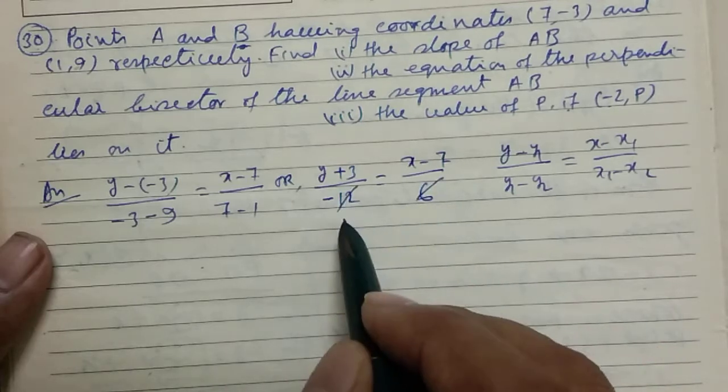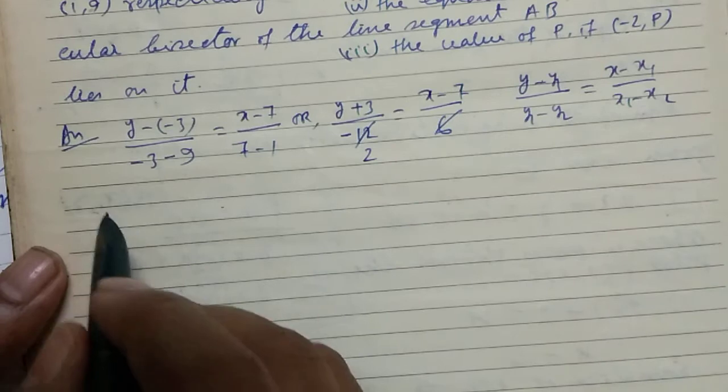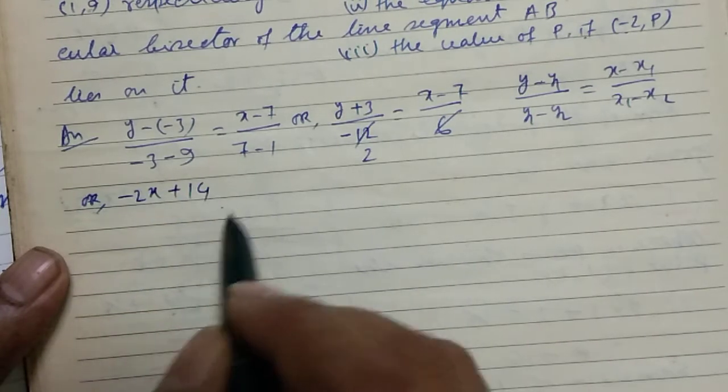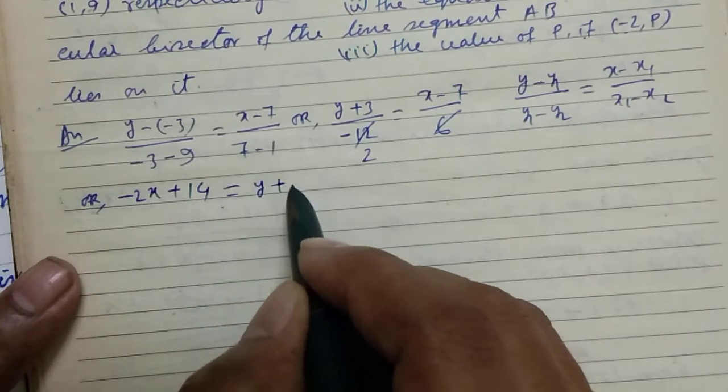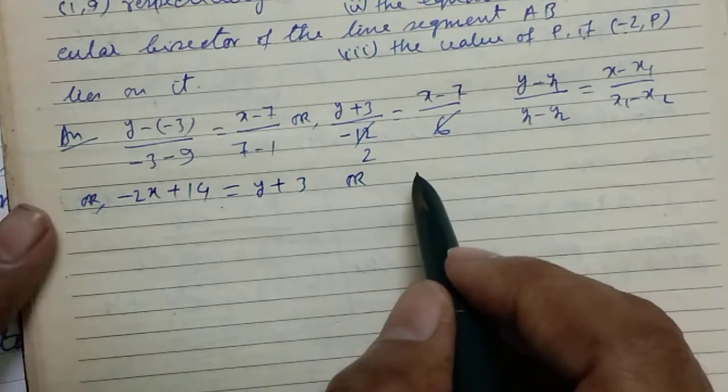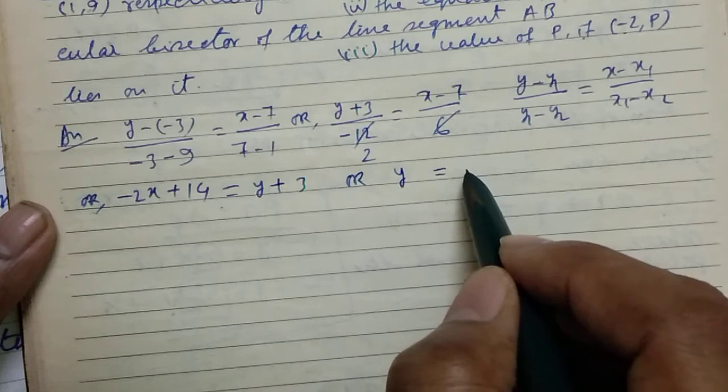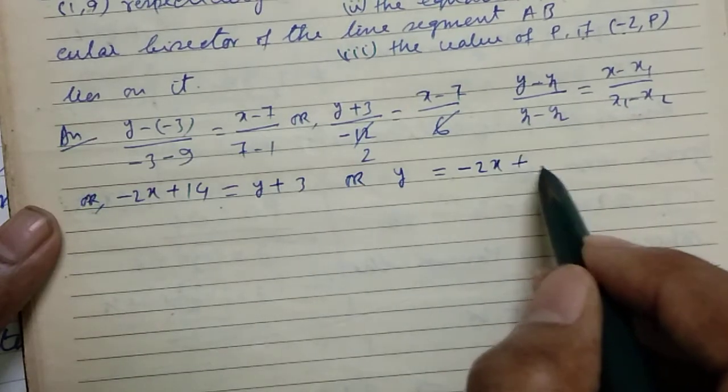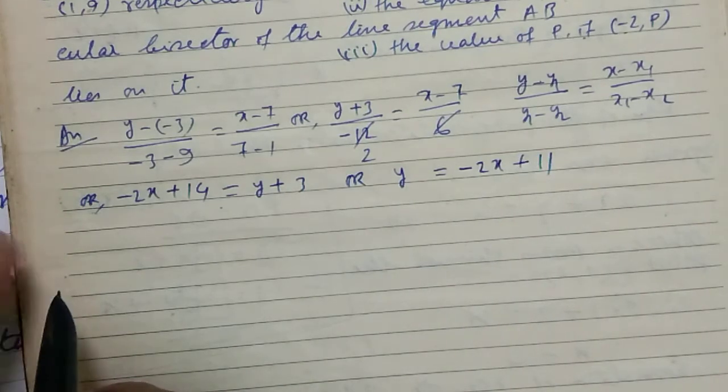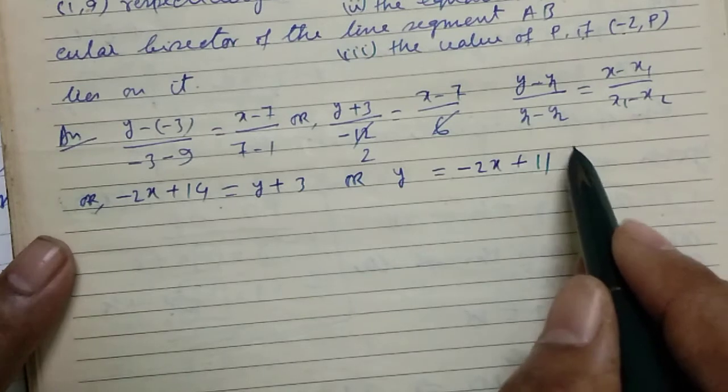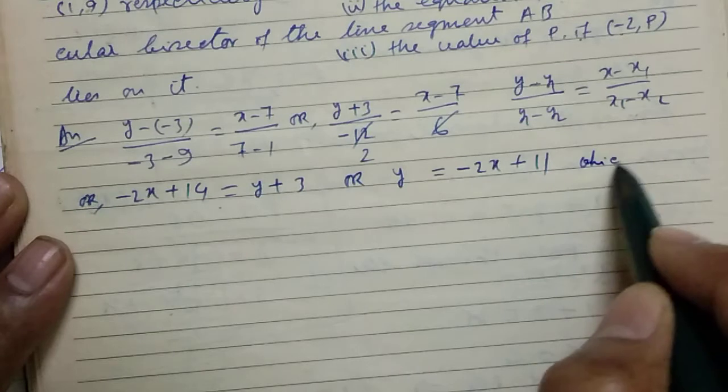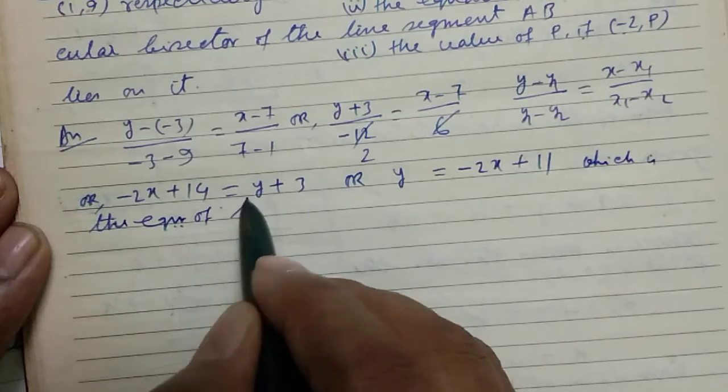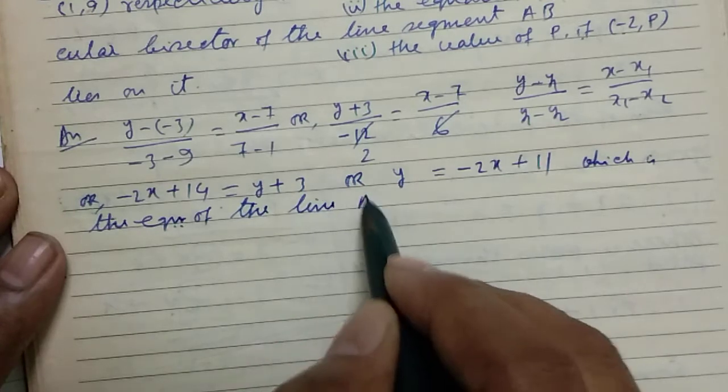We cancel and cross multiply, or -2x + 14 equals to y + 3, or y equals to -2x + 14 - 3, that is equals to -2x + 11. And this is the equation of the line AB.